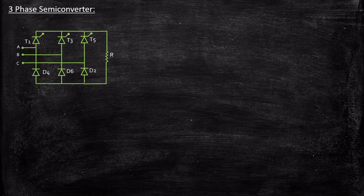Hello everyone, in this video we're going to take a look at the three-phase semi-converter circuit. This is the circuit diagram of a three-phase semi-converter. The major difference with a fully controlled rectifier is that the lower legs are replaced with diodes instead of thyristors, so you only have some amount of control with the help of T1, T3, and T5.